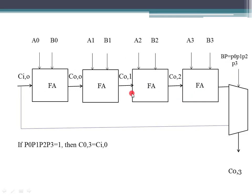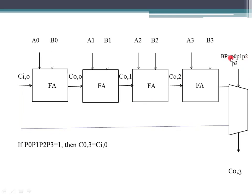So if BP equals 1, we can take the input carry and bypass it directly to the output carry. Through a multiplexer, we can bypass the input carry. The selection line of the mux is BP, which is P0 AND P1 AND P2 AND P3. If all propagations are 1, then BP equals 1.